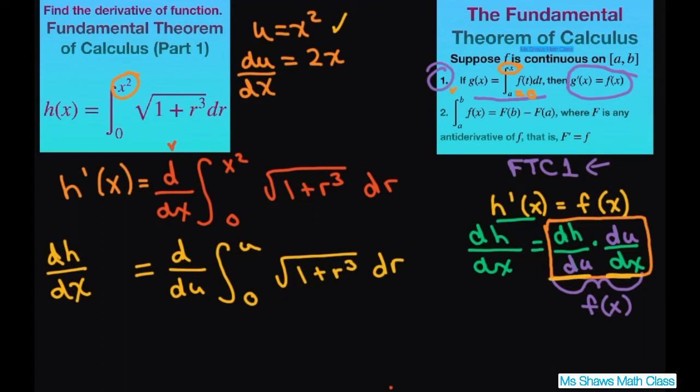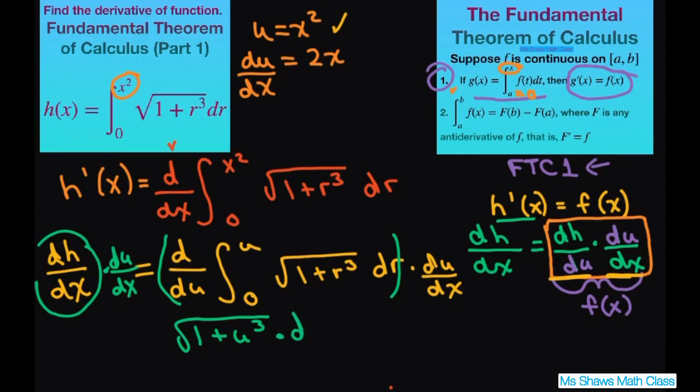Now we have to multiply it by DU DX. Once you have that down, we can go ahead. This part is your DH DX, and then we're multiplying it by DU DX, both sides of the equation. So this is just going to be square root of 1 plus U cubed, times the derivative of U with respect to X. Again, I keep coming back to this formula here.